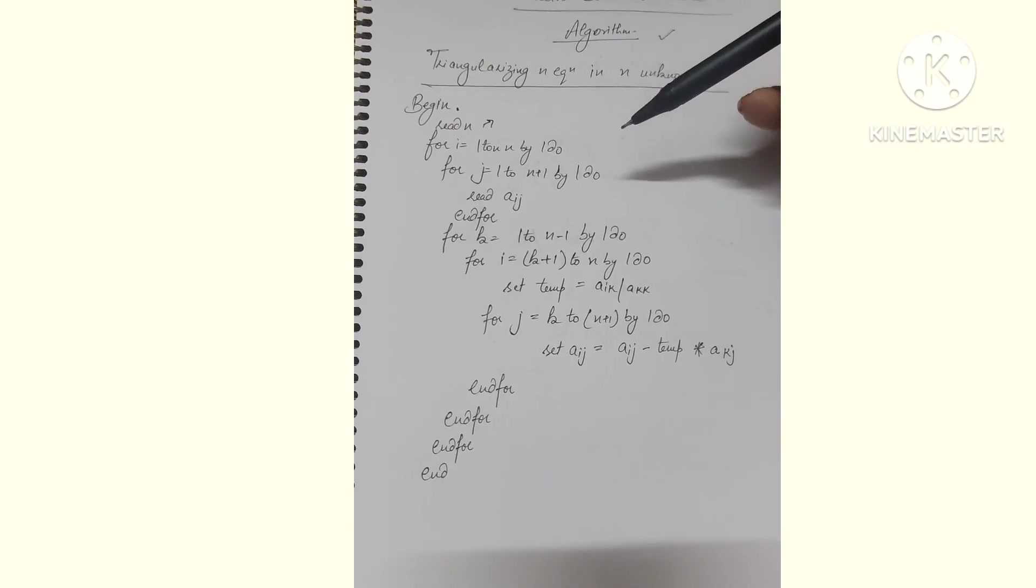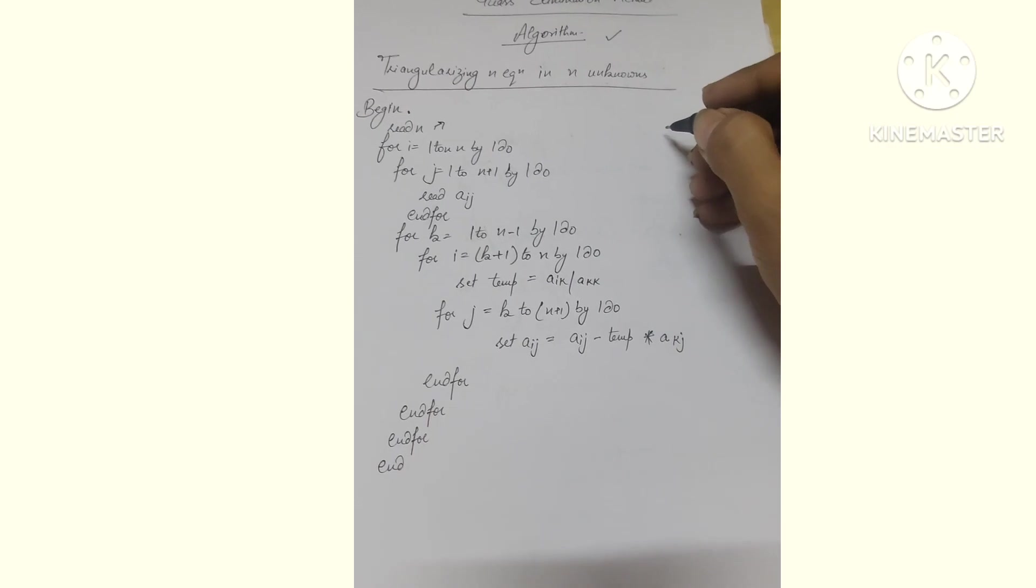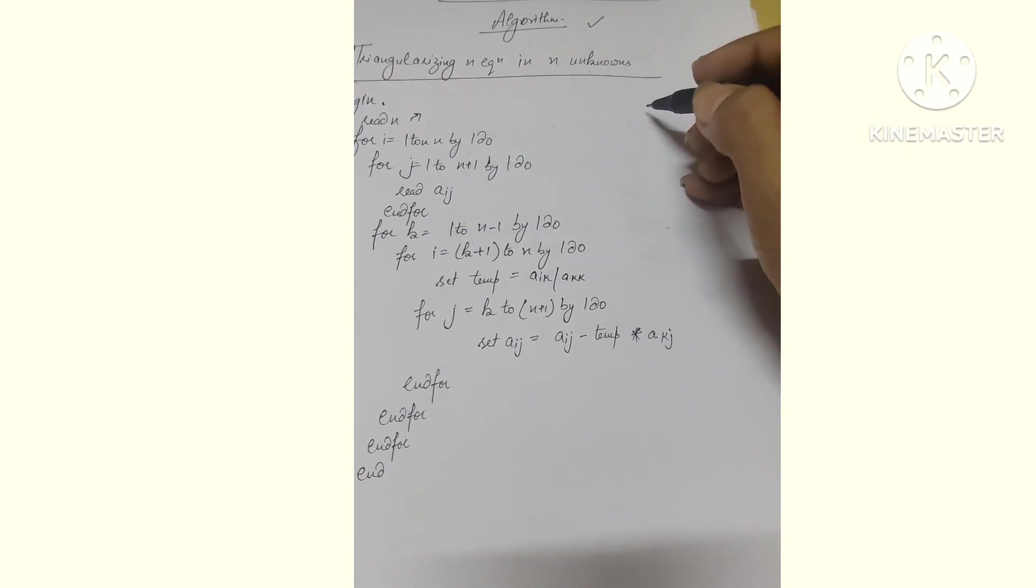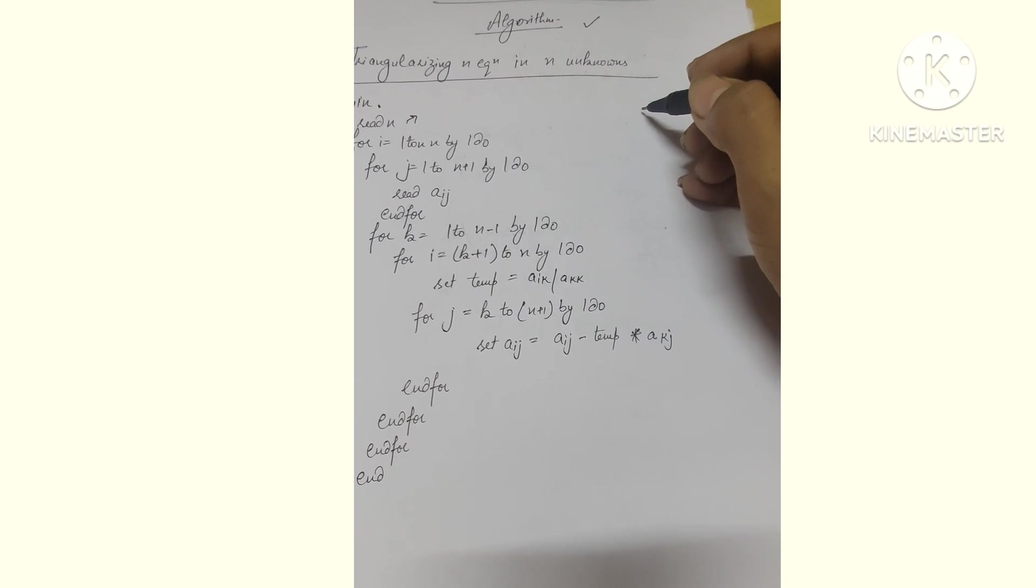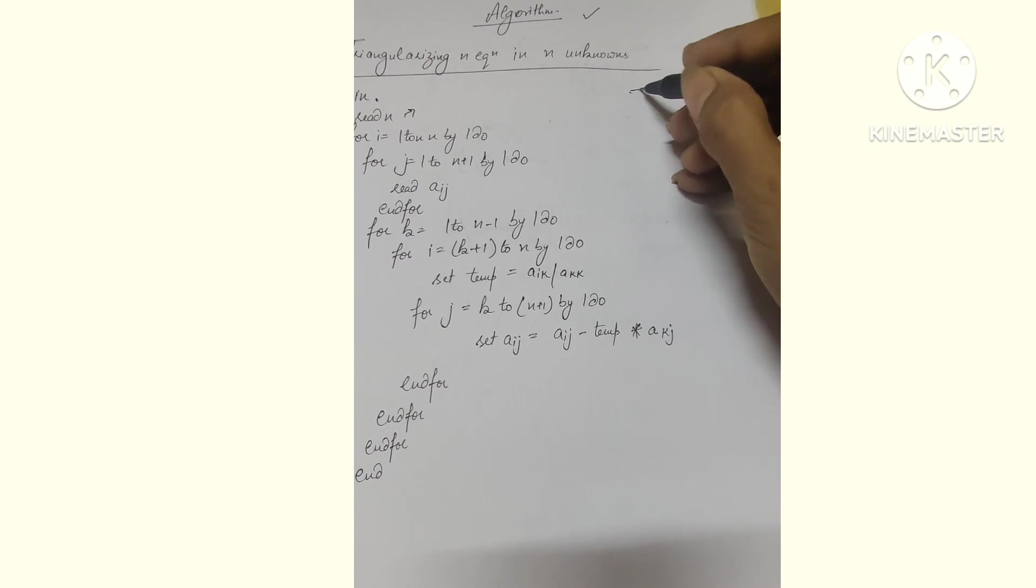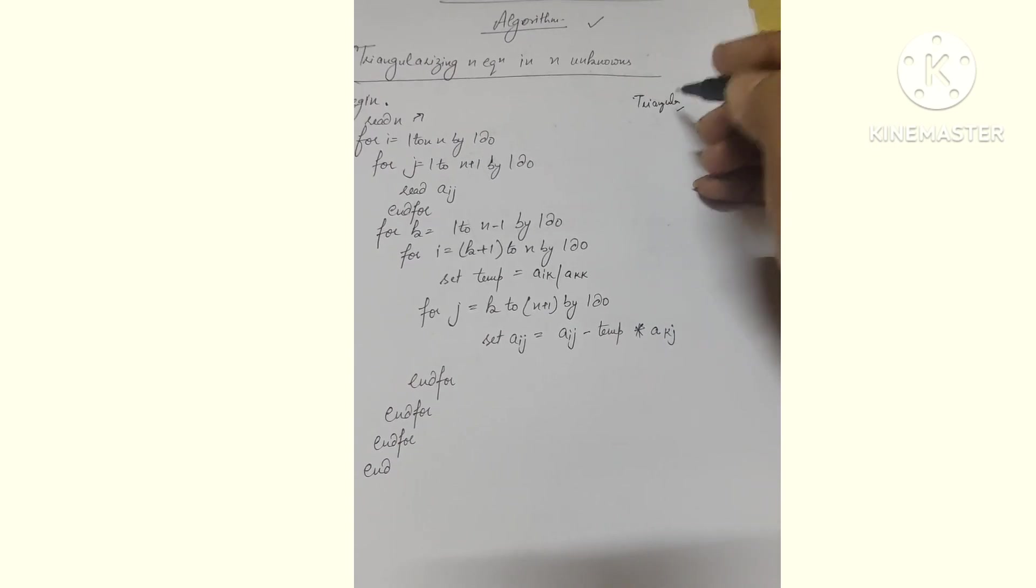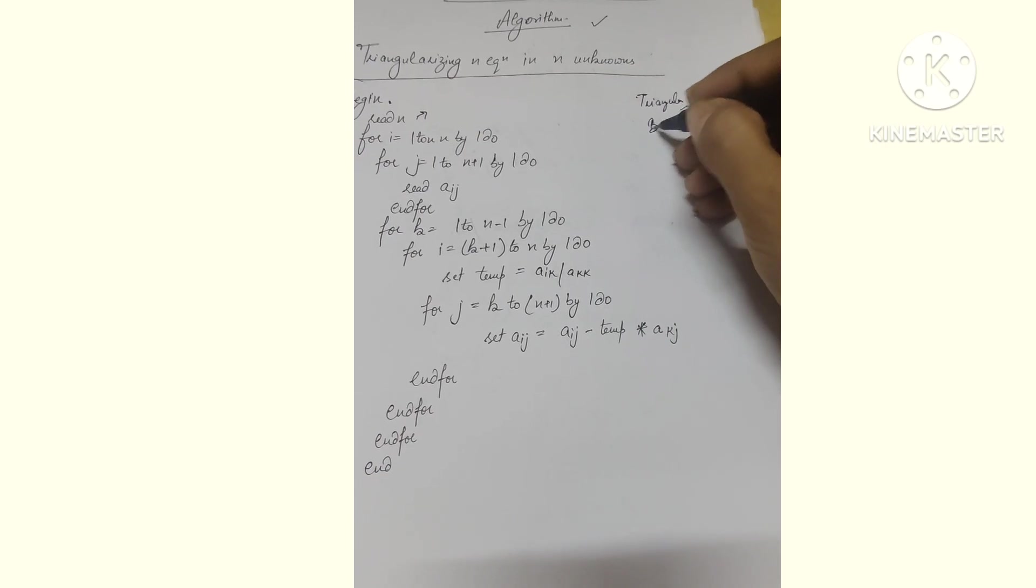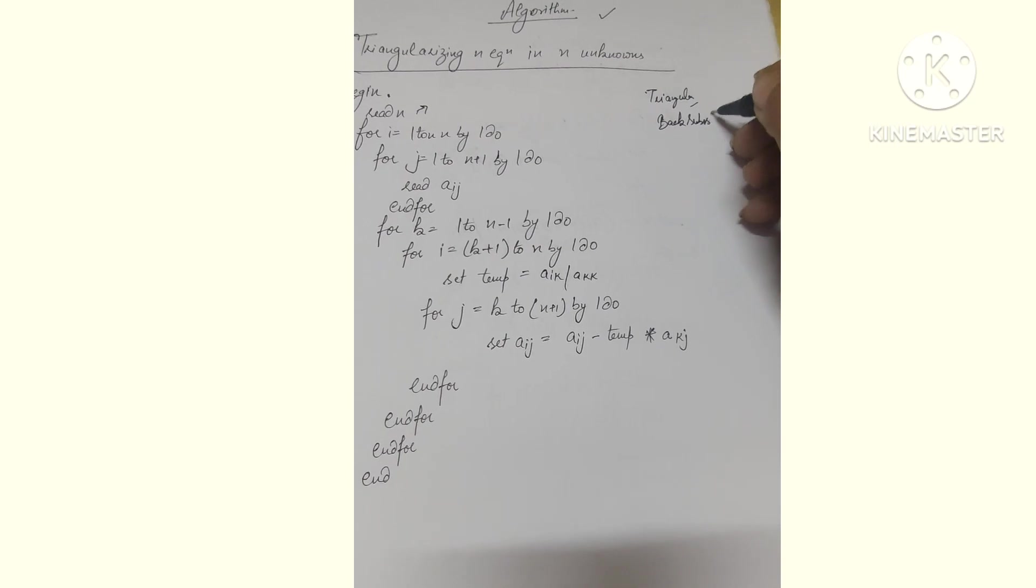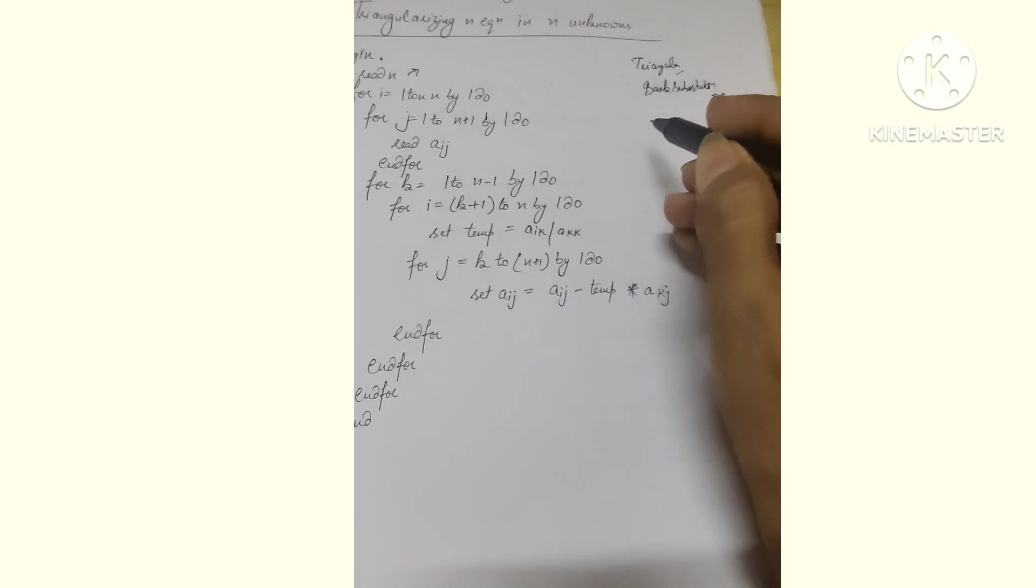We'll run a loop: for i equals 1 to n. In elimination, there are unknown values. When you need to eliminate, two types of methods will run: one is triangularization, where steps must be executed, and another is back substitution. When your triangularization is complete, then you must enter into back substitution.